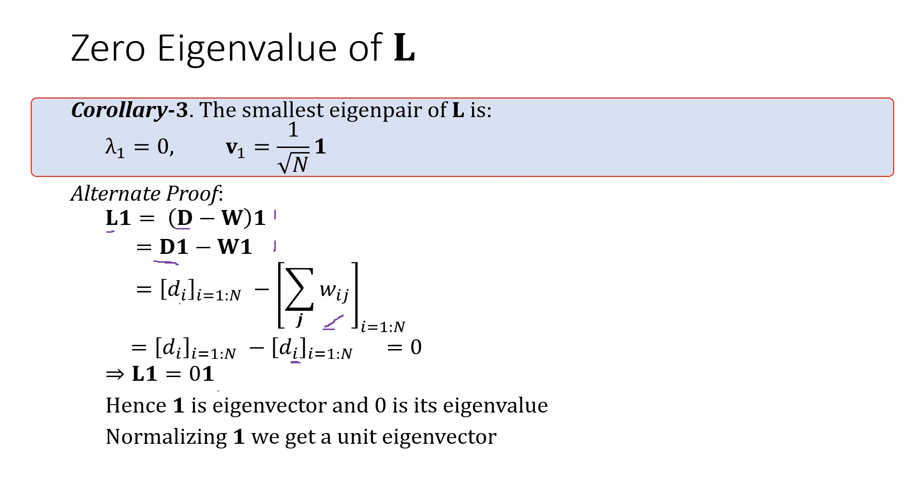And so L1 equals 0 times 1. Hence, 1 is an eigenvector and 0 is its eigenvalue. We can normalize 1 to get a unit eigenvector v1.